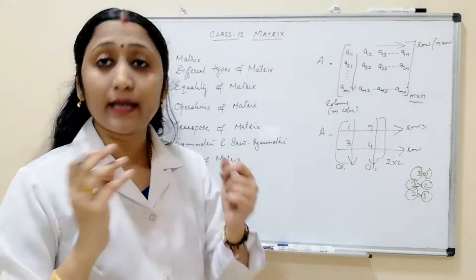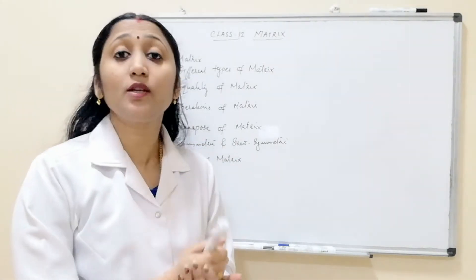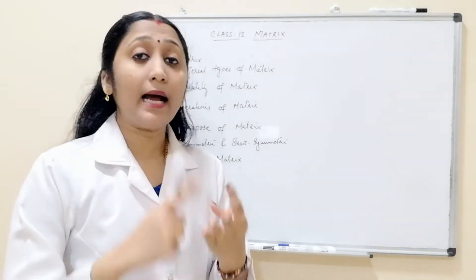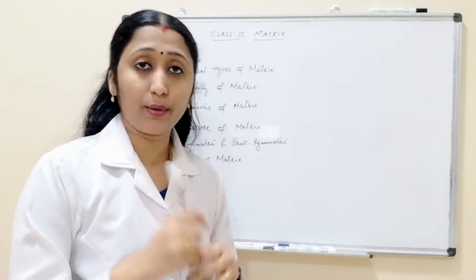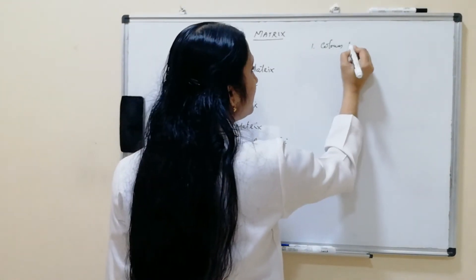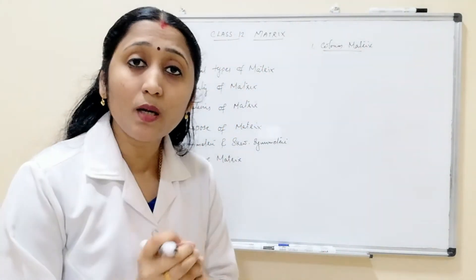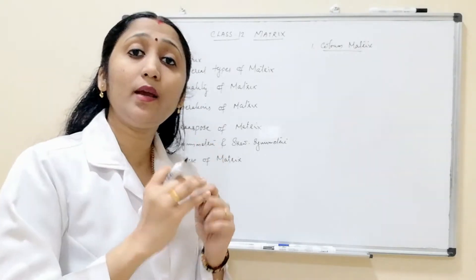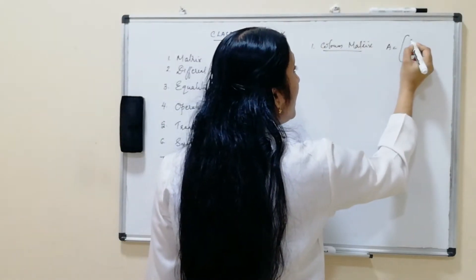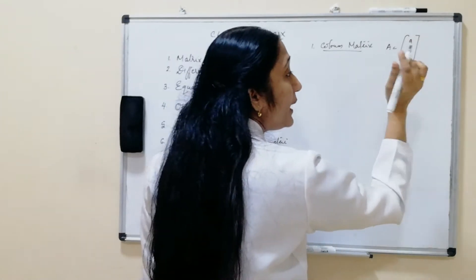Moving on to the different types of matrix: column matrix, row matrix, diagonal matrix, identity matrix, and zero matrix. First is the column matrix. A column matrix has only one column. For example, A = [a; b; c] — it has only one column. Its order is m×1.